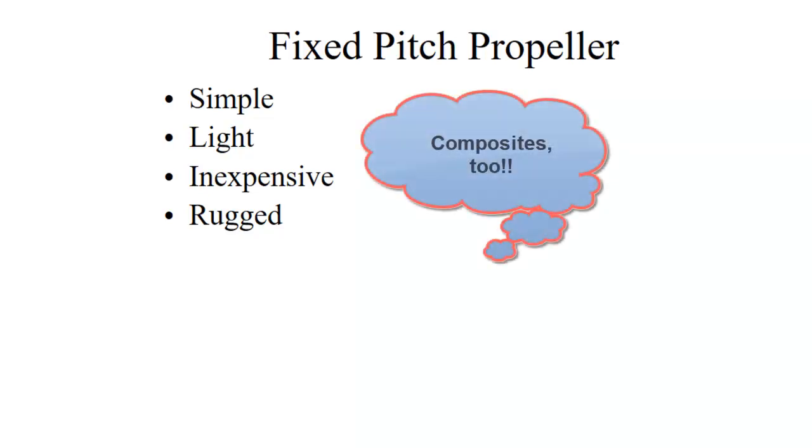Fixed pitch propellers have the big advantage of being simple. And because they're simple, it makes it really great for a student pilot to learn to fly with. They're relatively light. They're relatively inexpensive. And they're pretty darn rugged. They're a big chunk of metal. They're not even hollow usually. Of course, there is such a thing as a wooden fixed pitch propeller. And those are still being made. And they've got some advantages of their own. Wood is actually a very strong material for its weight. But the ones we deal with are metal. And they're fairly rugged.